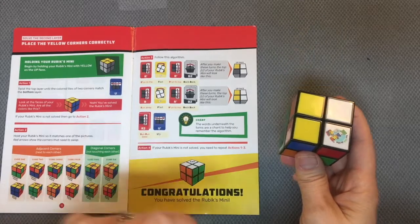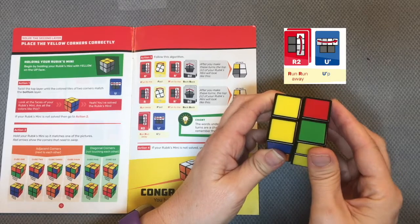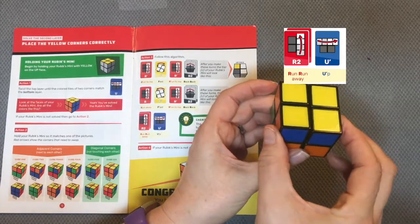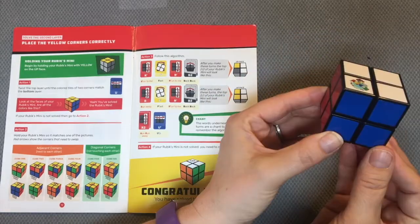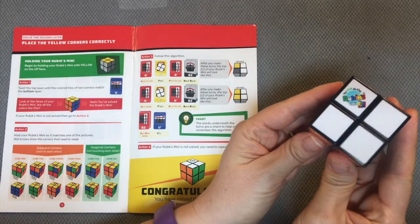Now I have the final run. Run, run away. That means one right turn and a second right turn and a final up. And there it is. A solved Rubik's Cube mini.